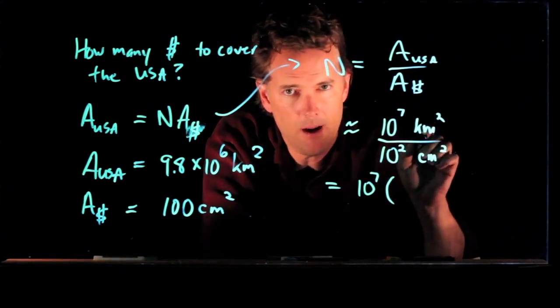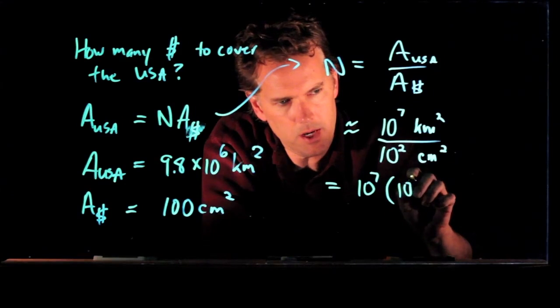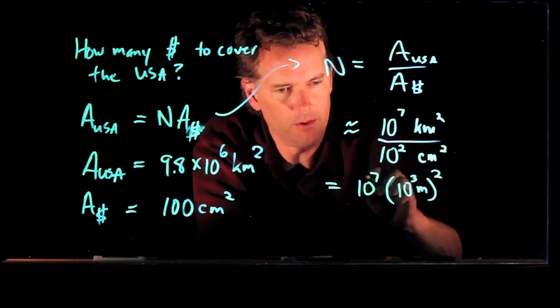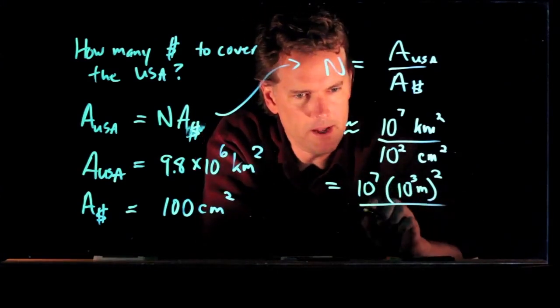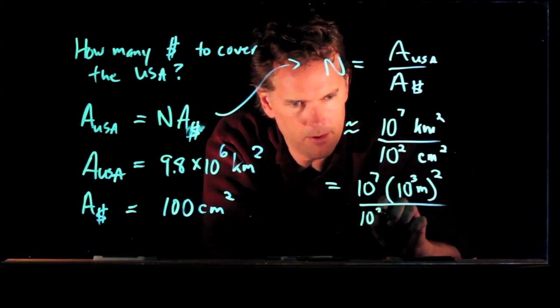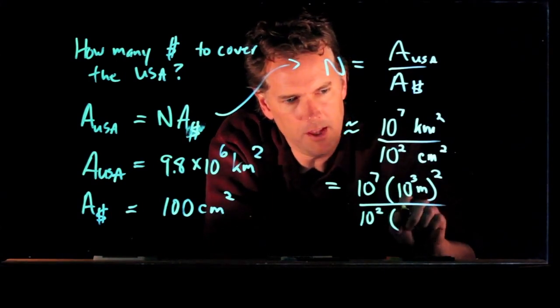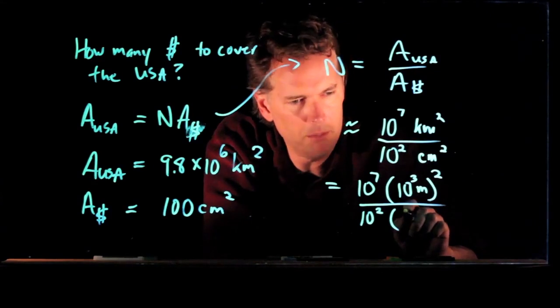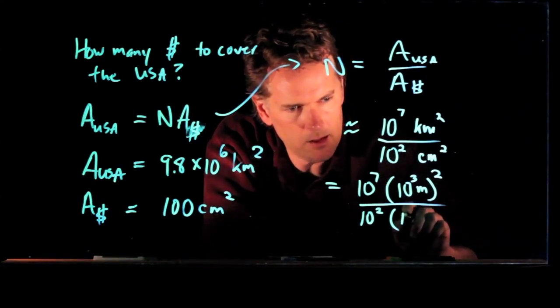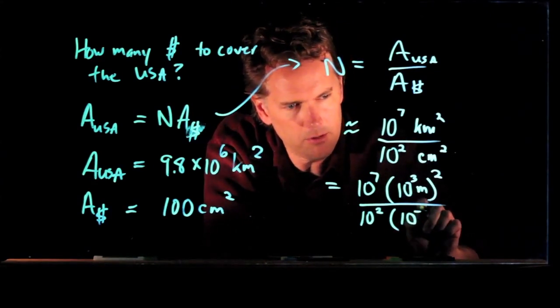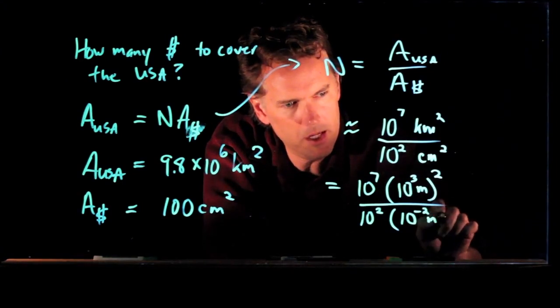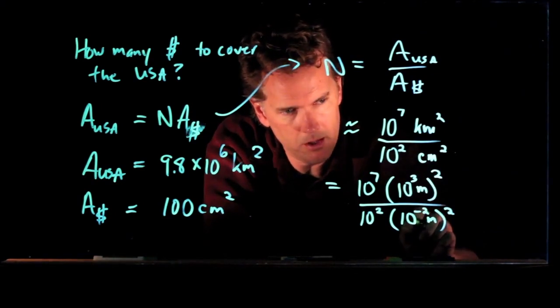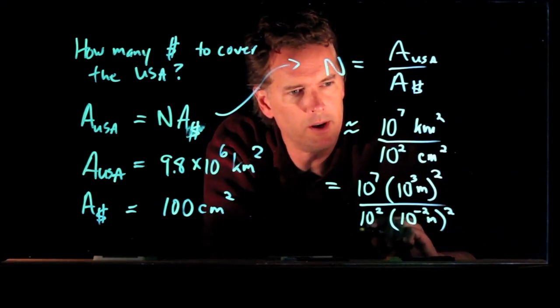We get 10 to the 5 centimeters. How big is a centimeter? Well, there's 100 centimeters in a meter, so that is 10 to the minus 2 meters, right? A centimeter is much smaller than a meter. It's a hundredth of a meter, and so we got to put that number in right there.